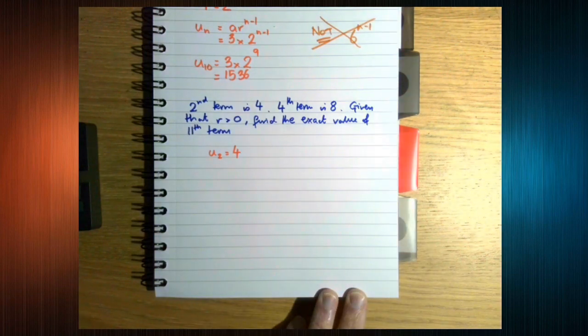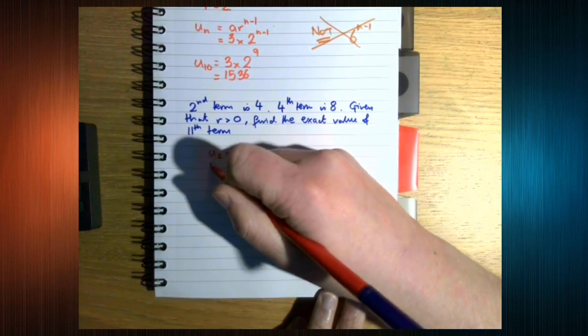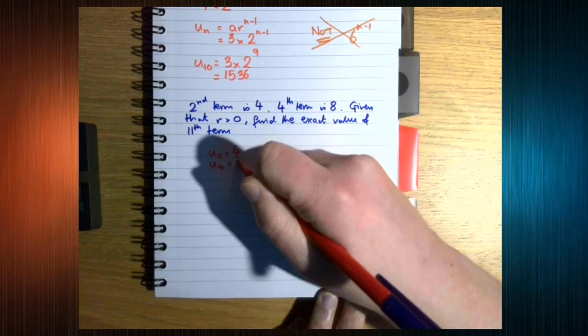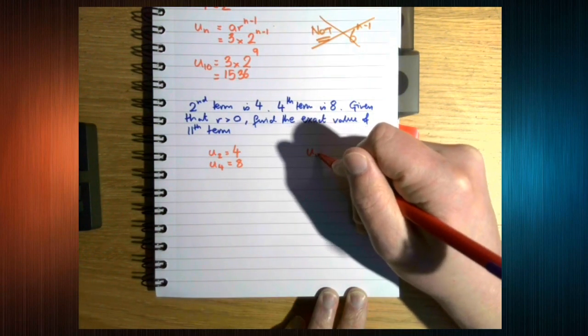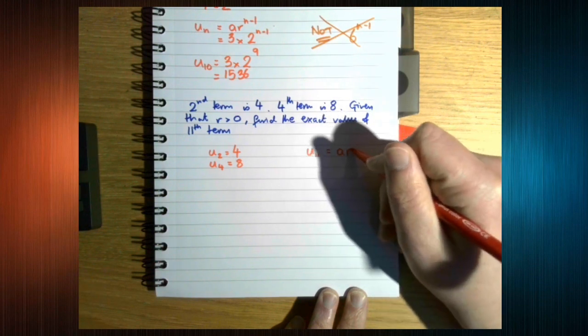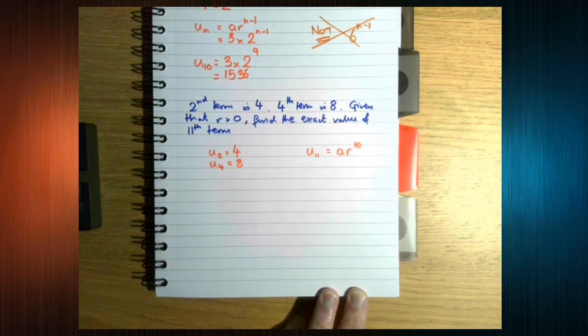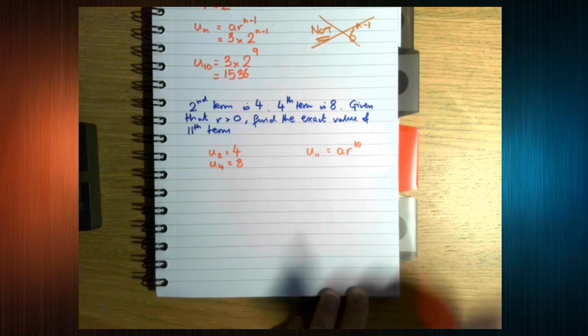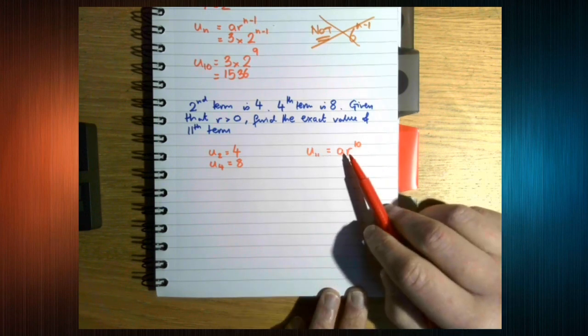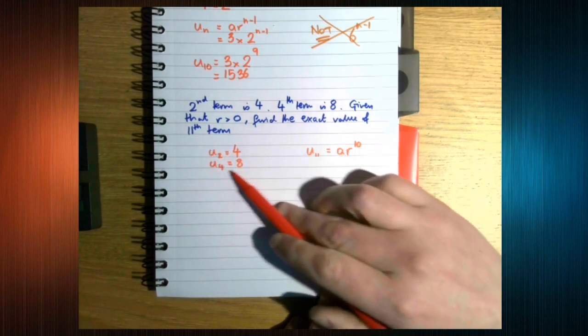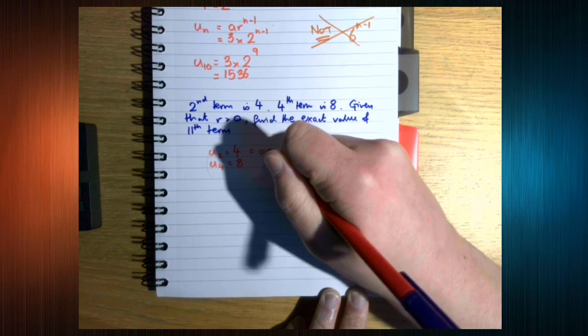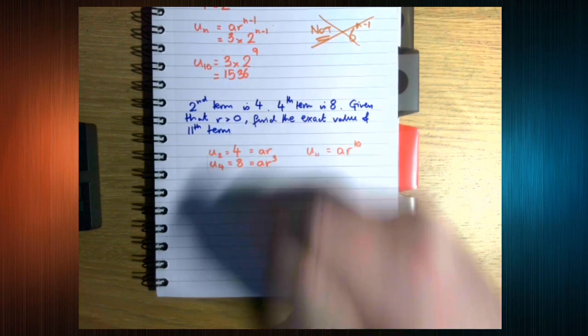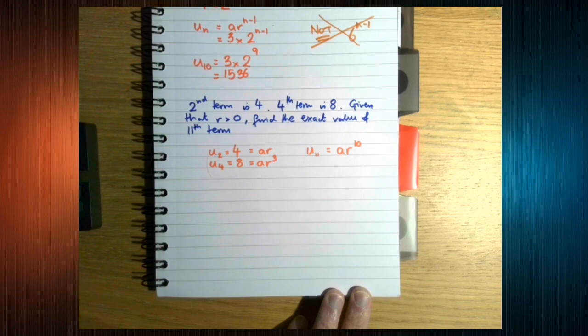We know that u2 is 4, and we know that u4 is 8. We're trying to find u11, which we know is ar to the 10th. We need a and r, so let's write these in terms of a and r. Oh look, we're doing simultaneous equations again.